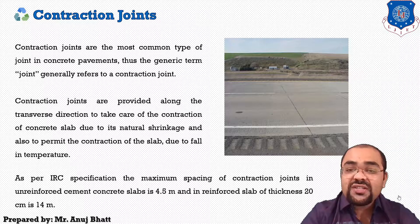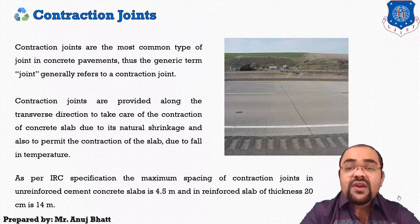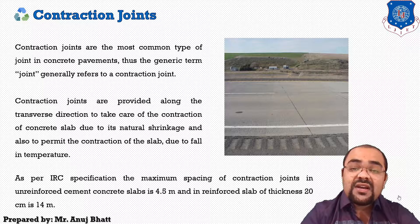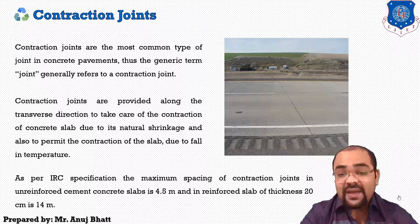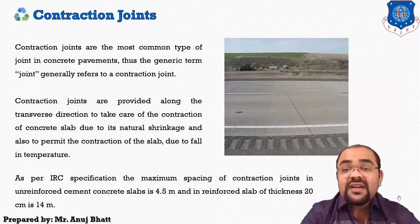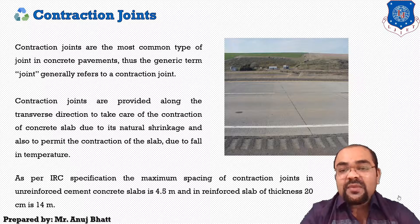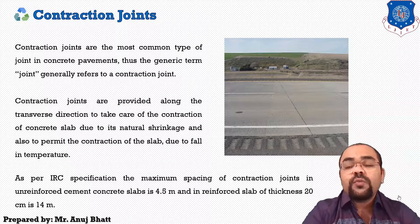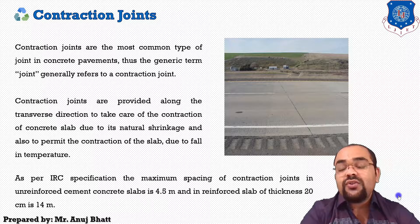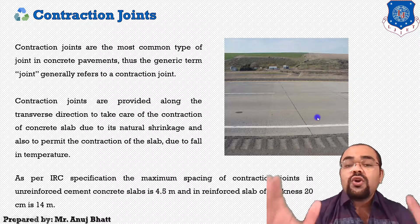As per IRC specification, the maximum spacing of contraction joints in a plain cement concrete slab is capped at 4.5 meters. In a reinforced slab with a thickness of 20 centimeters, the spacing is 14 meters. Load transfer at the joints is provided through physical interlocking by aggregates projecting out from the joint faces. The contraction joint is shown in the figure, and this direction is known as the contraction joint.